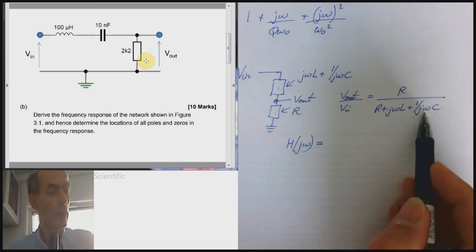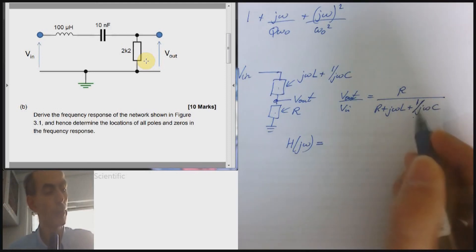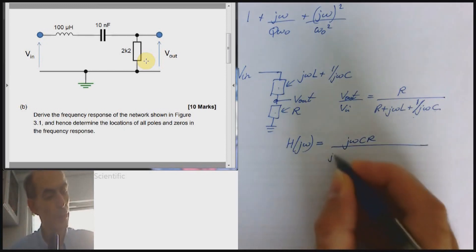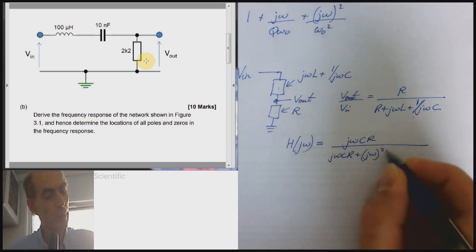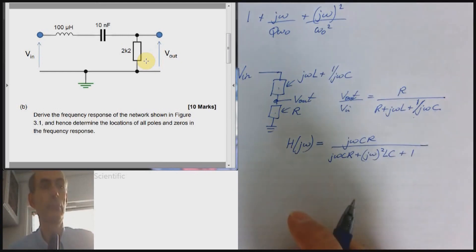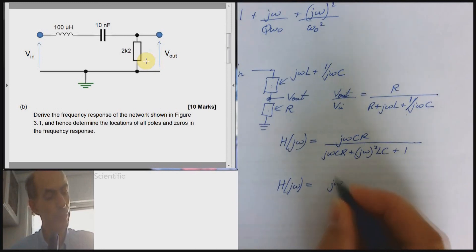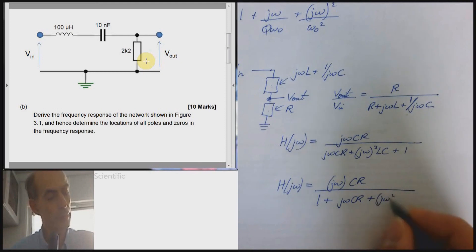And the easiest way to do that is just to multiply up by whatever is underneath this term. So multiply top and bottom here by jωC. And this 1 over jωC would just become 1. So multiply top and bottom by jωC. And we would get jωC times R all over jωC times R plus jω squared LC plus 1. And we can rearrange that into what might be a slightly more familiar form. jωRC over 1 plus jωRC plus jω squared times LC.